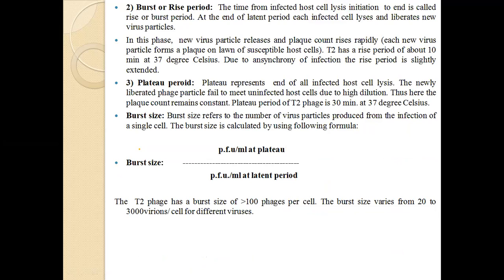The burst period or rise period is the time from infected host cell lysis. T2 has a rise period of about 10 minutes at 37°C. Due to unsynchrony of infection, the rise period is slightly extended. The plateau period represents all infected host cells having lysed. The newly liberated phage particles fail to meet uninfected host cells due to high dilution, so the plaque count remains constant. The plateau period of T2 phage is 30 minutes at 37°C.